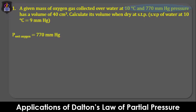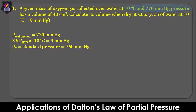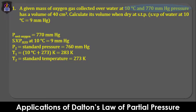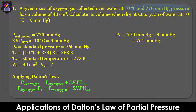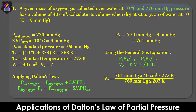From the question: the pressure of wet oxygen (total pressure) is 770 mmHg; saturated vapor pressure of water at 10°C is 9 mmHg; standard pressure P2 is 760 mmHg; initial temperature T1 is 10°C = 283 K; standard temperature T2 is 273 K; initial volume V1 is 40 cm³; and we determine V2 at STP. From Dalton's Law: P(dry O₂) = P(wet O₂) − SVP(water) = 770 − 9 = 761 mmHg. Using the general gas equation P1V1/T1 = P2V2/T2 and solving for V2, we obtain 38.6 cm³ as the volume of the dry oxygen.